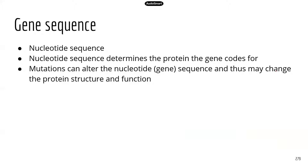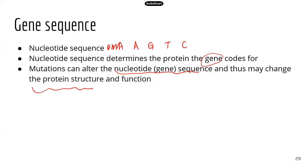Gene sequence is really nucleotide sequence. DNA has four different kinds of nucleotides — adenine, guanine, thymine, and cytosine — and different combinations make various sequences. The nucleotide sequence directs protein synthesis and determines the protein that the gene codes for. Mutations could change the nucleotide sequence or gene sequence, which can lead to changes in protein structure. Since structure determines function, once the protein structure is changed, the function of the protein could also be changed.